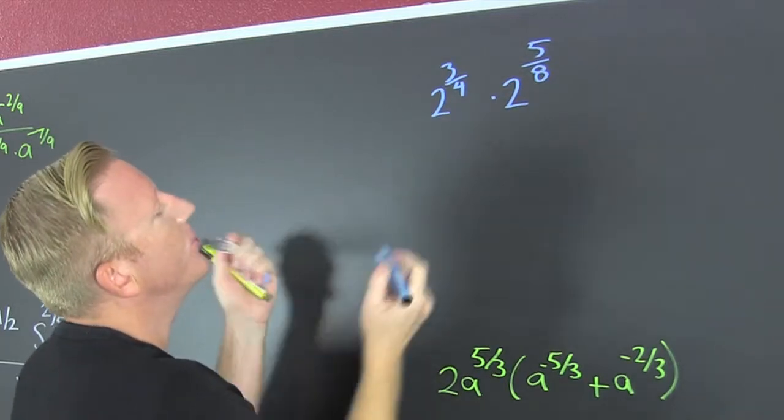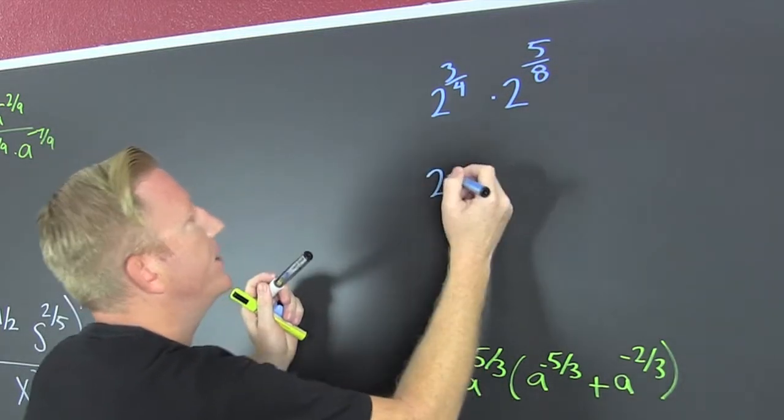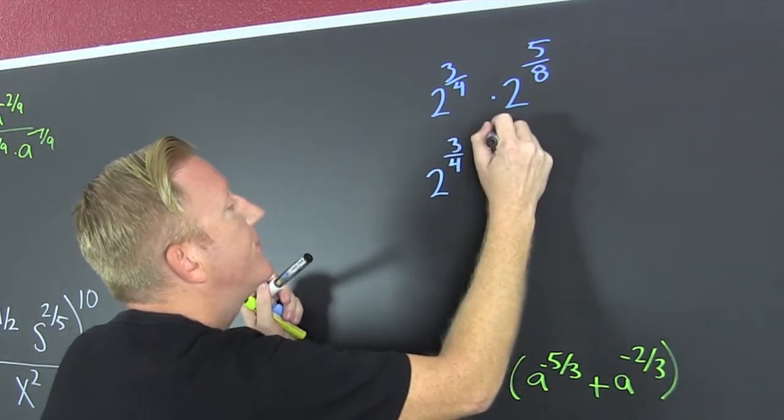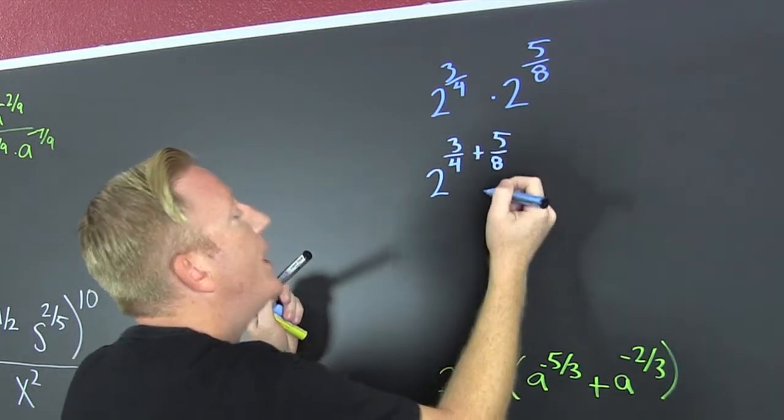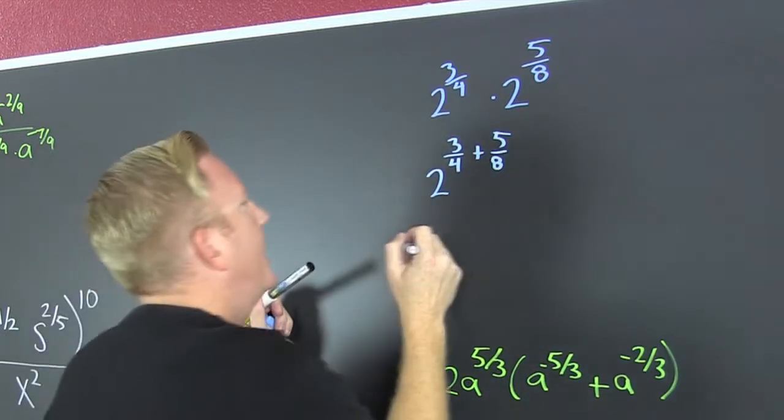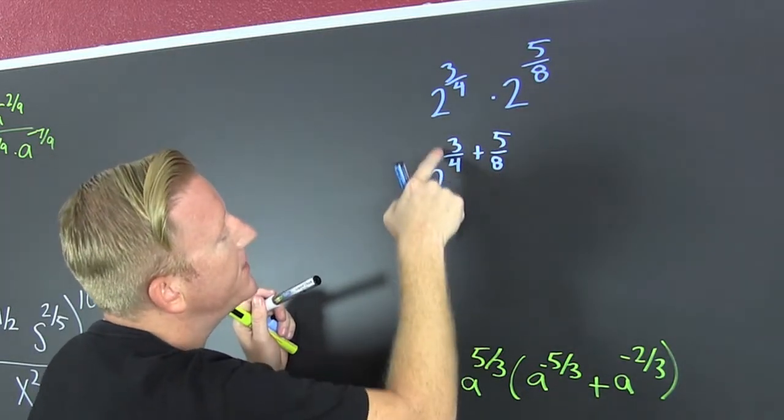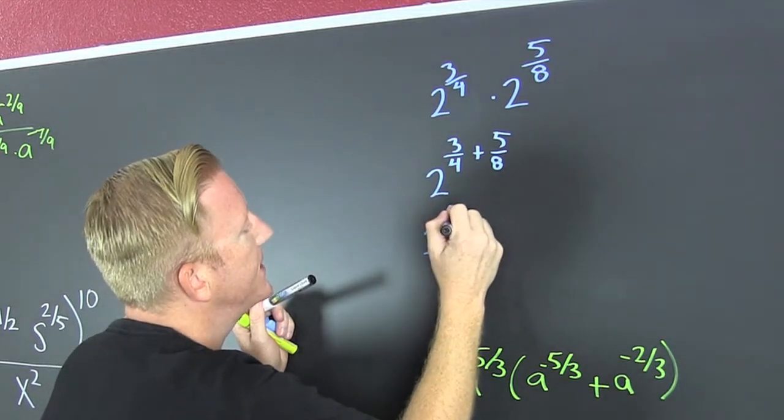If you have the same base and you're multiplying, what are you gonna do to their exponent? We're gonna have 3 fourths plus 5 eighths. Now I need a common denominator. I need to multiply that by a 2 over a 2, so that's a 6 eighths.